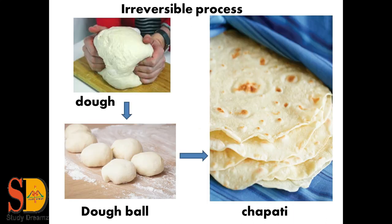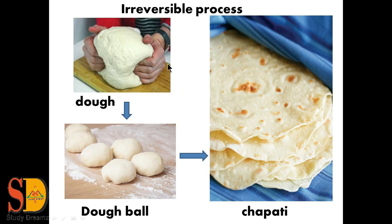Next I have another irreversible process. By kneading wheat flour, we make dough, and from this dough we make dough balls. After rolling these balls, we make our chapati. But can we get our dough back from this chapati? No, we cannot, because when we bake the raw materials, we cannot get them back — this is an irreversible process.